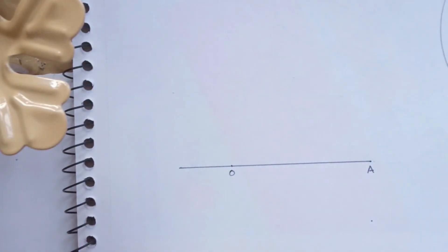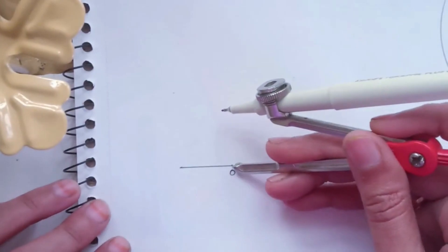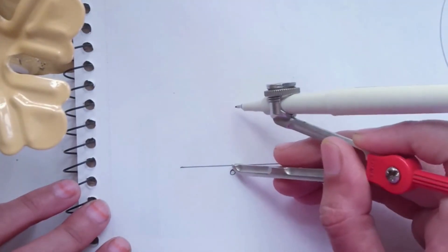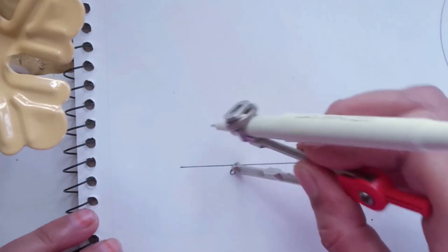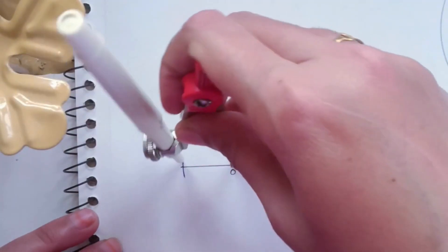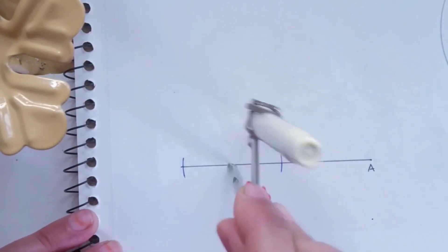Now take the compass and take any random distance between the compass and the pen. Keep the pointer on O and draw two arcs on the left and right hand side of O on the line.